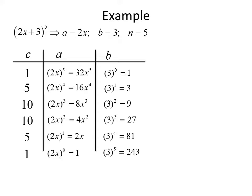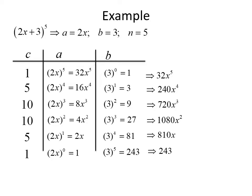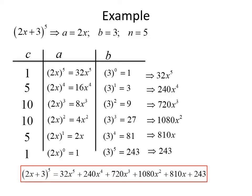We multiply across each row to find the different terms of our polynomial. 1 times 32x to the fifth times 1 gives us 32x to the fifth. 5 times 16x to the fourth times 3 gives us 240x to the fourth. 10 times 8x cubed times 9 gives us 720x cubed. 10 times 4x squared times 27 gives us 1080x squared. 5 times 2x times 81 gives us 810x. And 1 times 1 times 243 gives us 243. So (2x + 3) to the fifth power equals 32x to the fifth plus 240x to the fourth plus 720x cubed plus 1080x squared plus 810x plus 243.